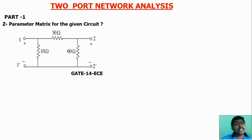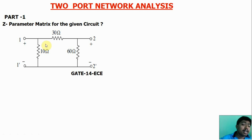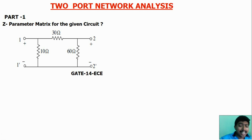We have already discussed two-port network concepts across seven videos. In the part one video, we discussed how to find the Z-parameters for given electrical circuits — for example, a GATE 2014 question on finding the Z-parameter matrix. That concept is discussed in part one; all video links are attached in the description box.